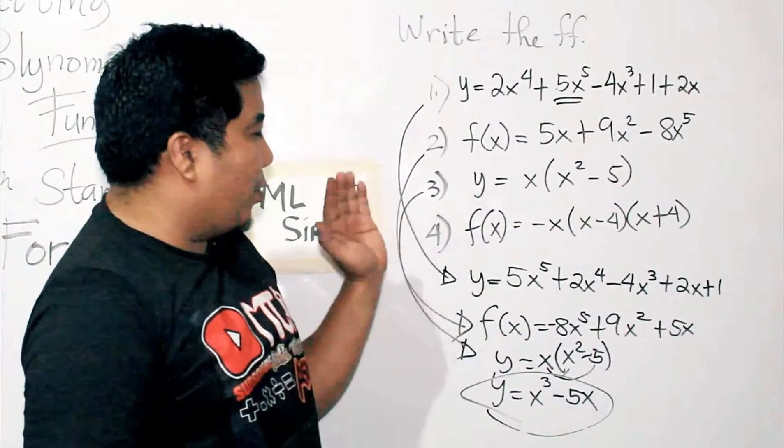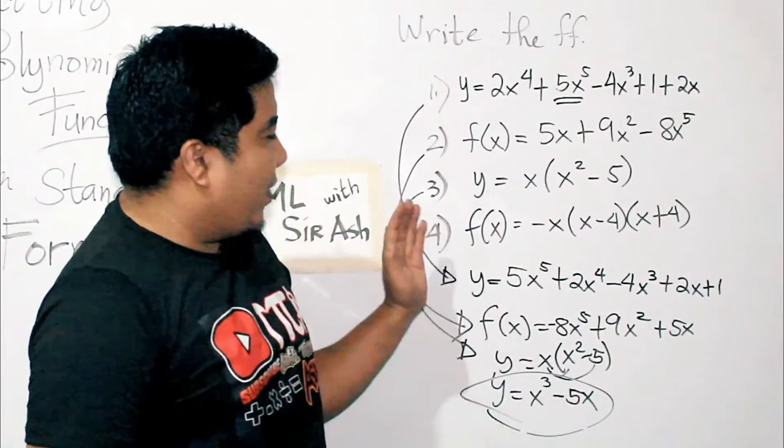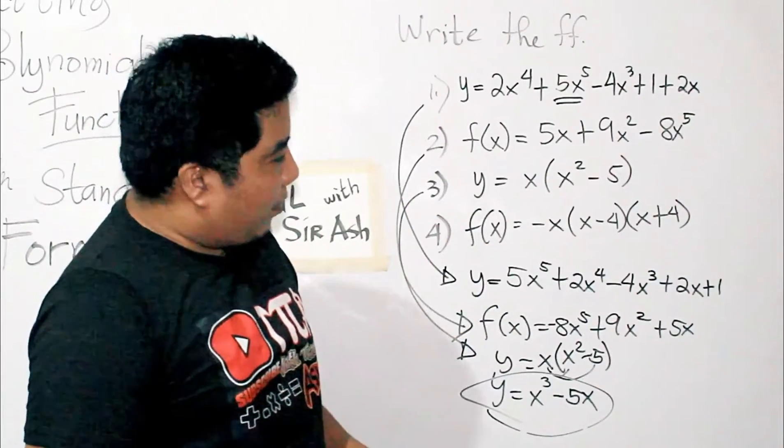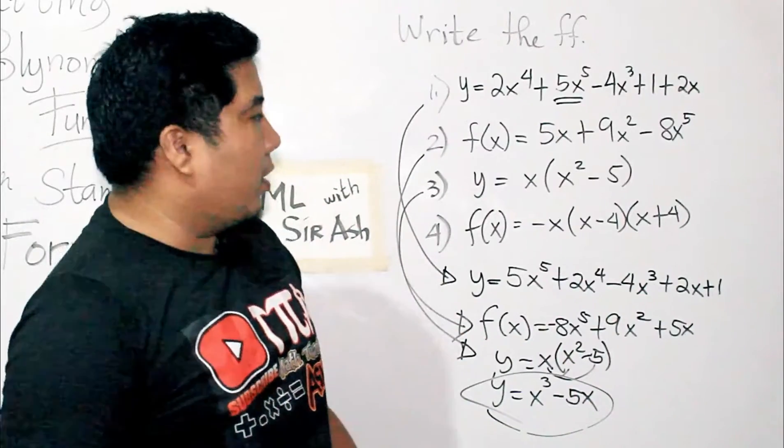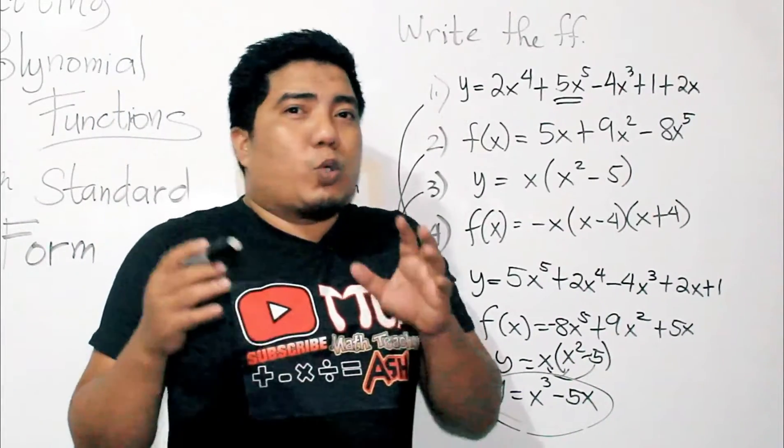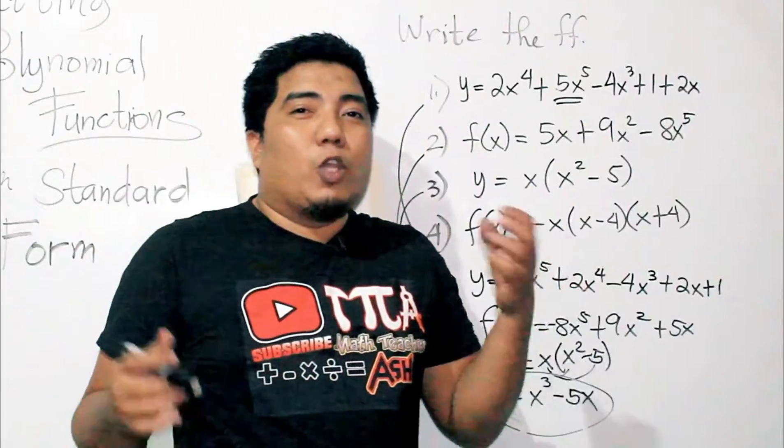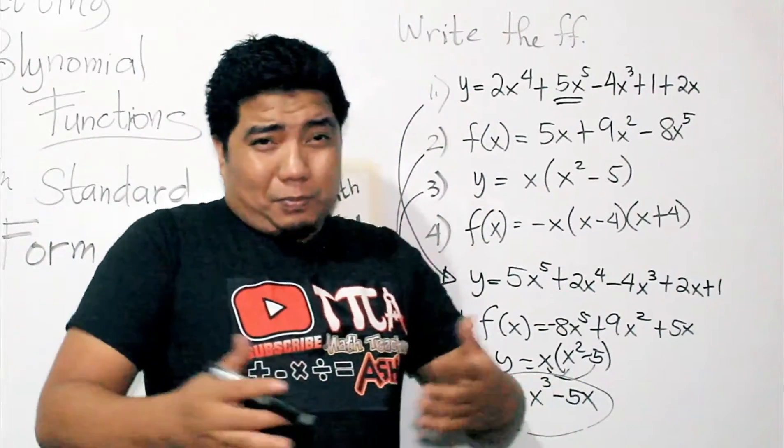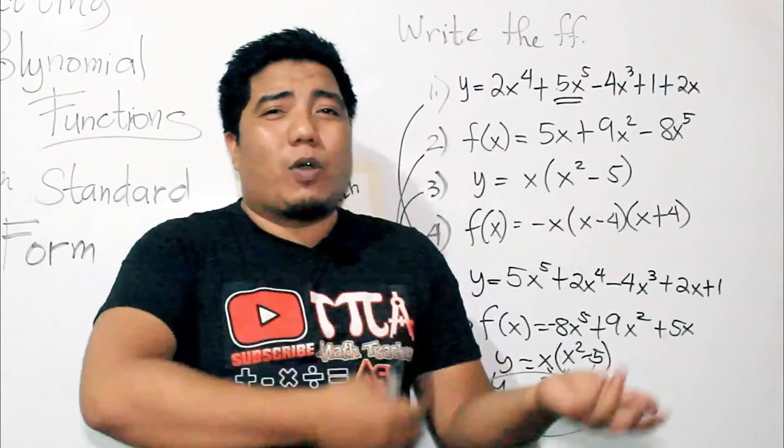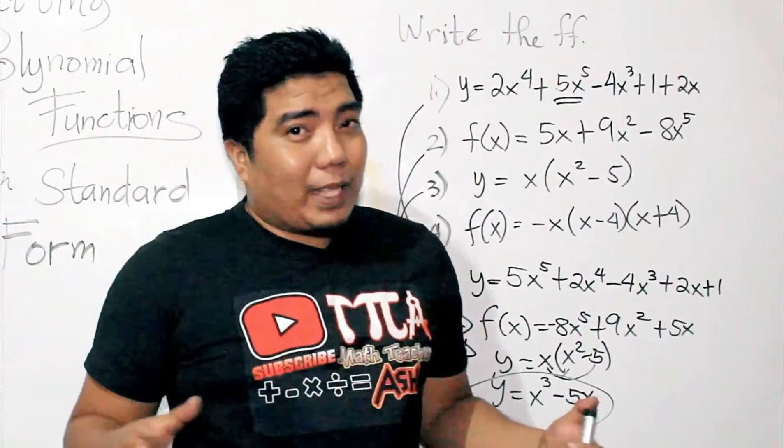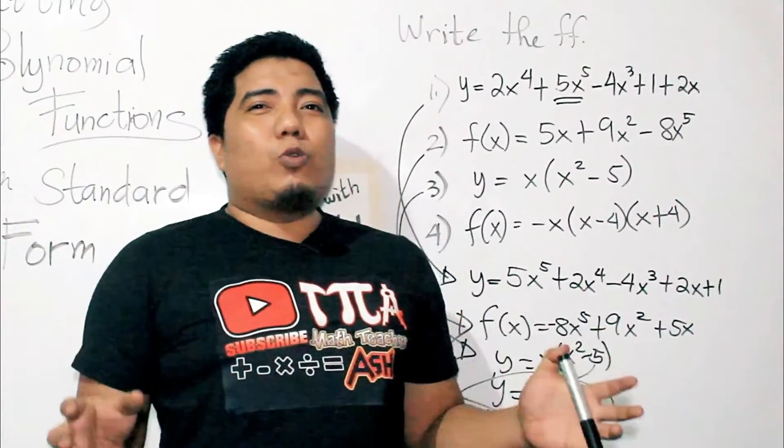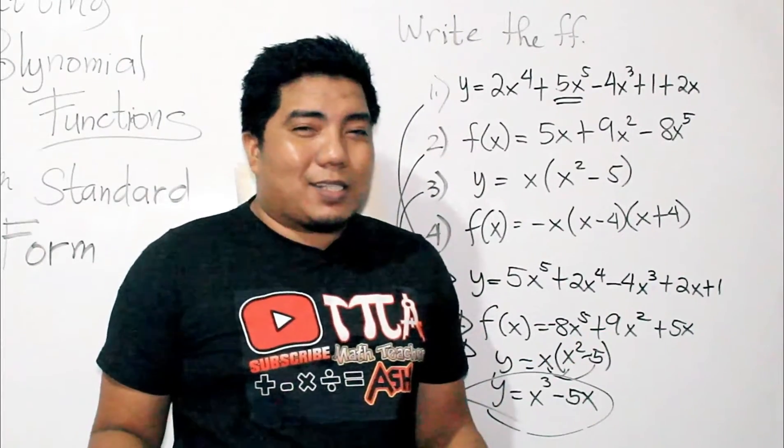Now, let us go to example number 4. We have f of x is equal to negative x times the quantity x minus 4 times the quantity x plus 4. So, we have three factors here. So, what you need to do here is, of course, you just need to apply the FOIL method. But, you can also apply some techniques, especially those special products.